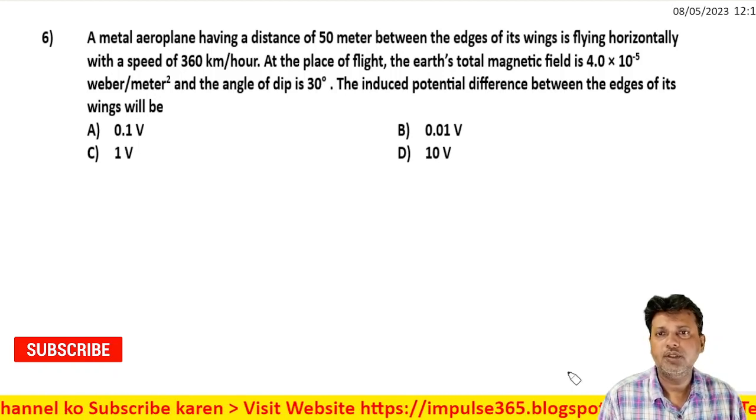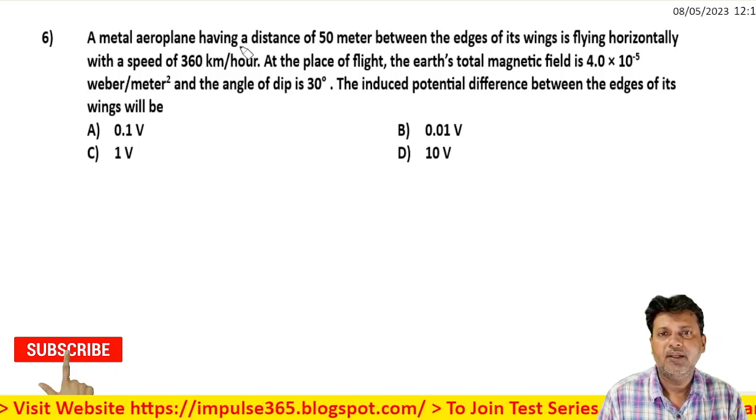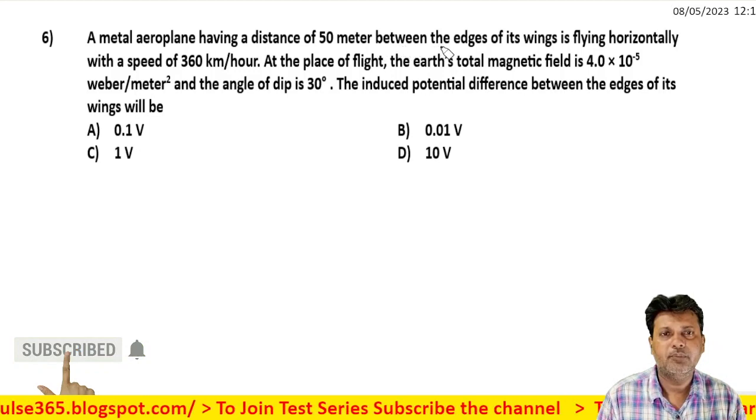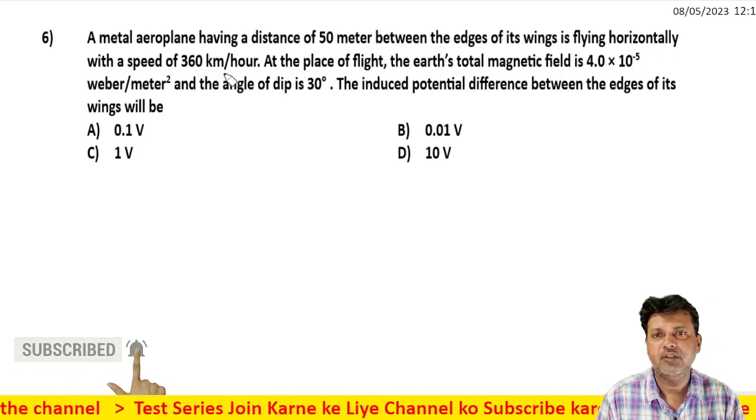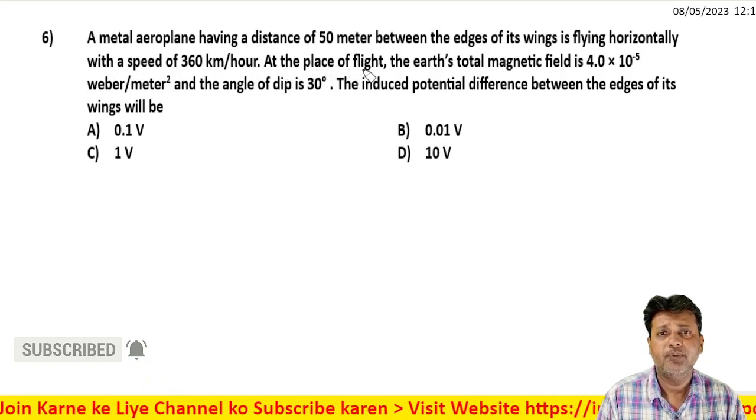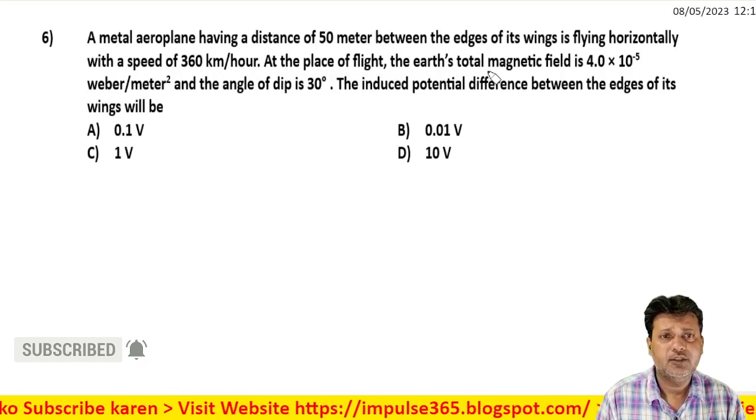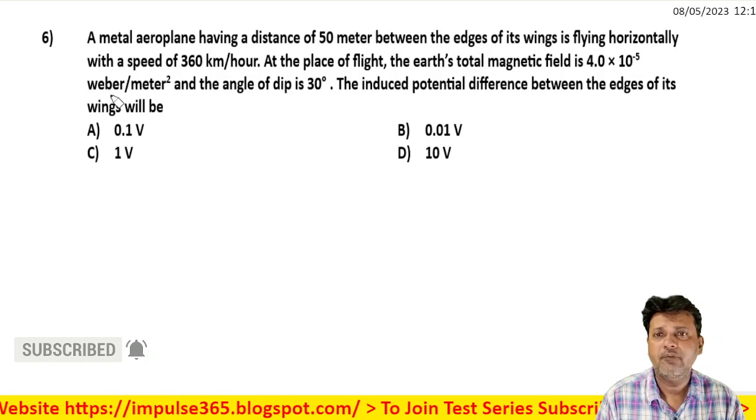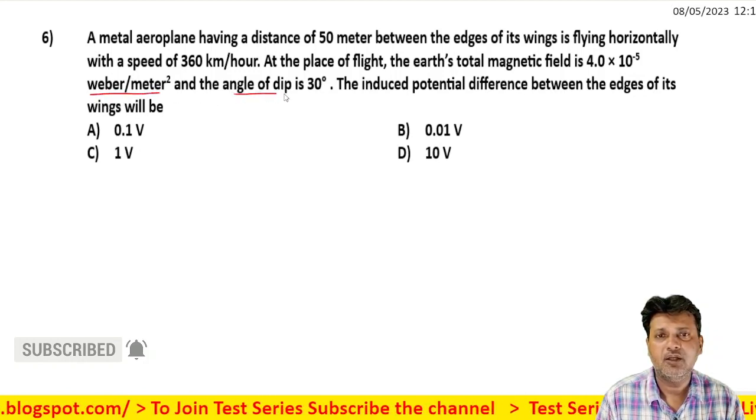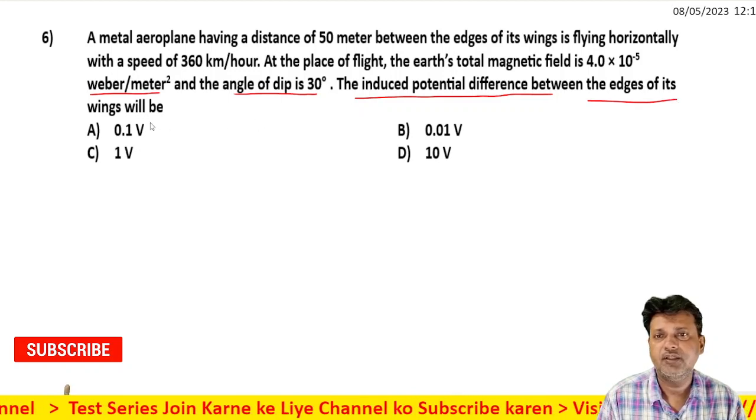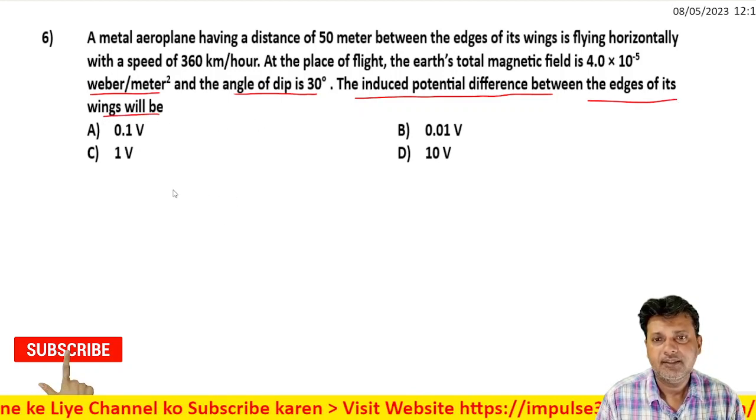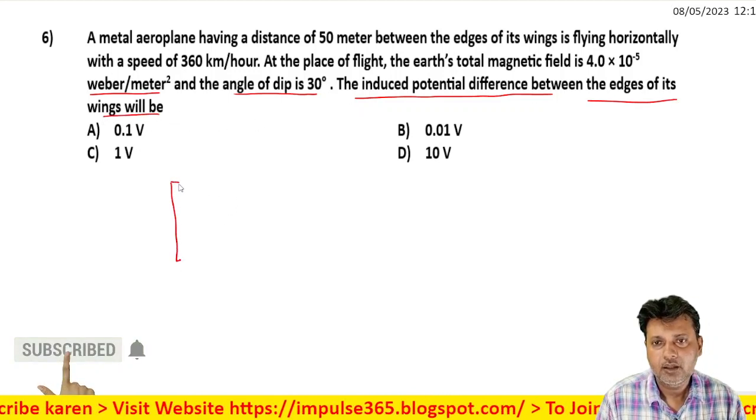A metal airplane having a distance of 50 meters between the edges of its wings is flying horizontally with a speed of 360 kilometers per hour. At the place of flight, the Earth's total magnetic field is 4 × 10^-5 Weber per meter squared and the angle of dip is 30 degrees. The induced potential difference between the edges of its wings will be...